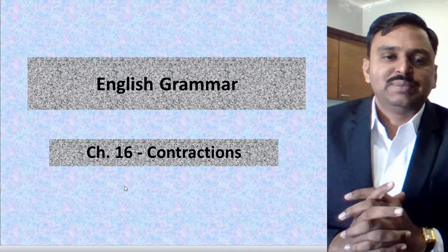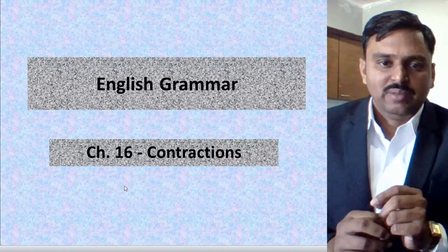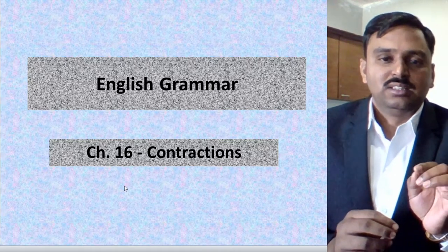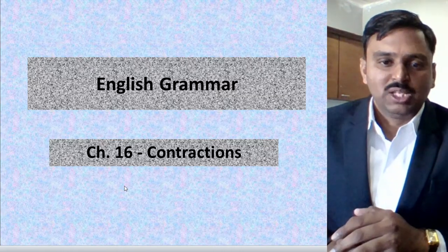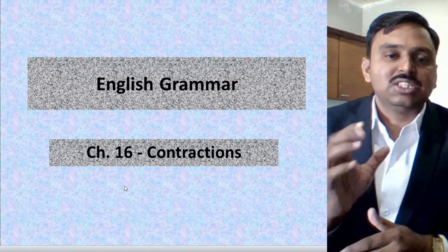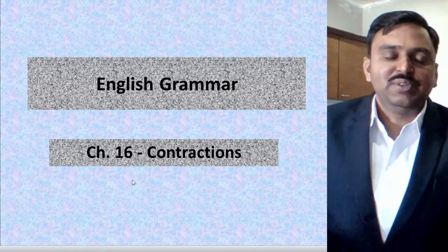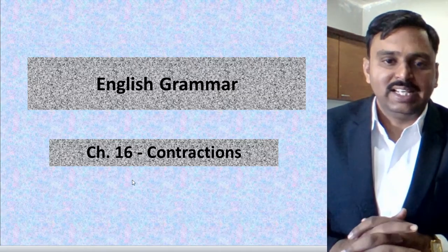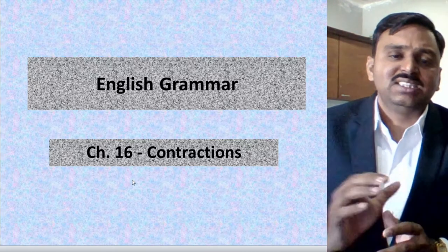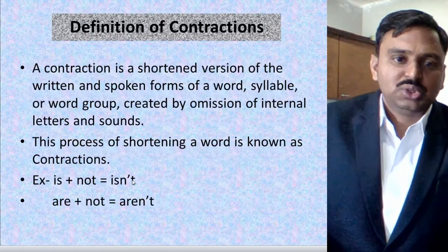For example, when I'm saying 'he is a boy,' we can make a short form. 'Is not' can be made as 'isn't.' So there are different forms of contractions that we use in English, and such short forms are called contractions.